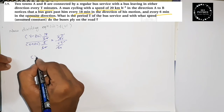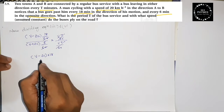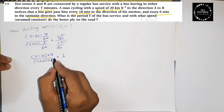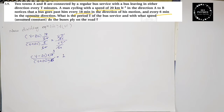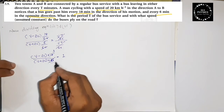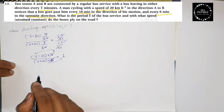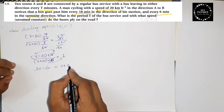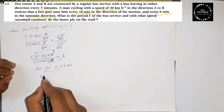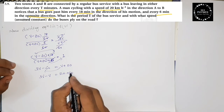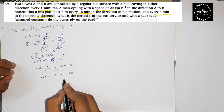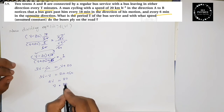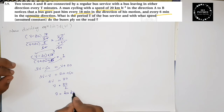Simplifying: (V minus 20) into 18 equals (V plus 20) into 6. Dividing both sides, multiply out: 3(V minus 20) equals (V plus 20), giving 3V minus 60 equals V plus 20. Therefore 2V equals 80, so V equals 40 km per hour. That is the speed of the bus.